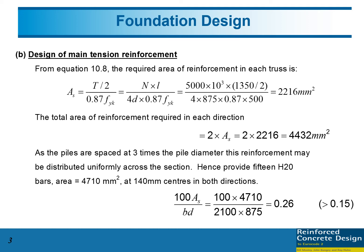Provide fifteen H20 bars with area of 4710mm². 4710 is the area of one reinforcement bar with diameter 20 multiplied by fifteen. After that we calculate the steel ratio of this reinforcement bar, so we get 0.26, which is higher compared to 0.15 because 0.15 is the minimum reinforcement ratio for concrete grade 30.